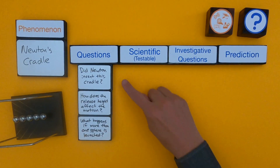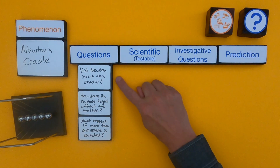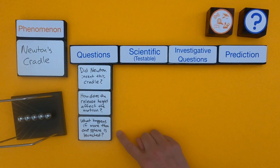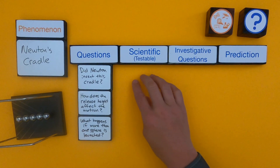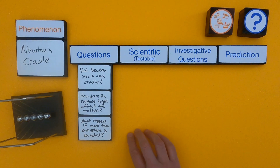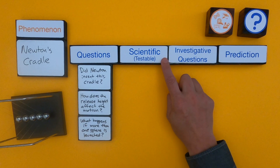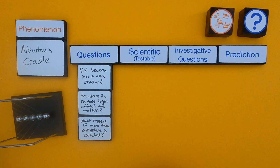The questions I came up with: first, did Newton really invent this cradle? How does the release height affect the motion? And what happens if more than one sphere is launched? The next thing I want to do is go through and figure out — are these testable? It has to be a scientific question, a question that we could actually test. Let me show you my thinking around that.